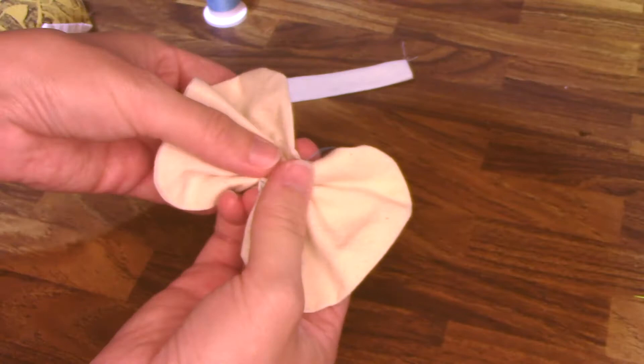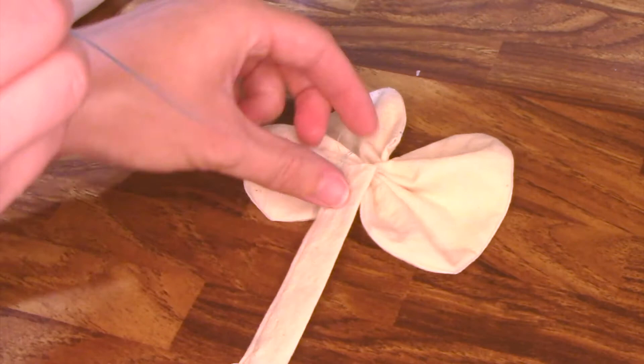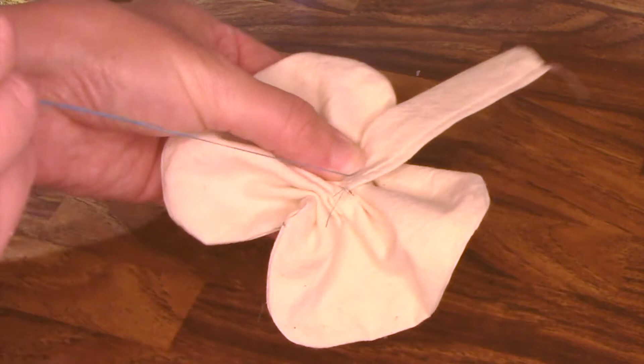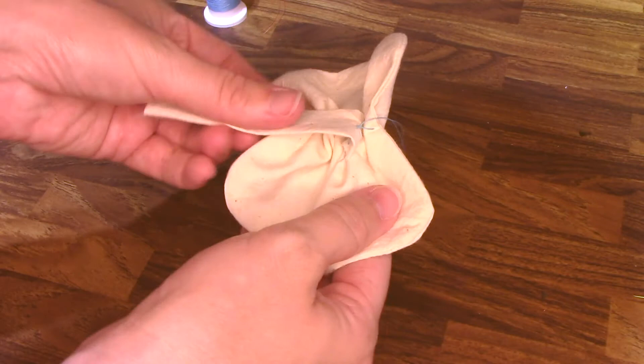Take your centerpiece and stitch one end to the back of the bow. Once you've stitched that one end down, wrap the centerpiece around the front and bring the other end back to the back. Fold the edge under and stitch down.